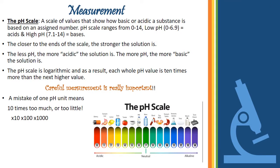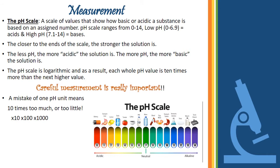pH shows the acidity or basicity of a substance based on a scale which assigns numbers ranging from 0 to 14. Low pH equals acid, high pH equals base, and the closer to the end of the scale, the stronger the solution. Importantly, the pH scale is logarithmic — each value is 10 times less than or greater than the next. For example, pH 4 is 10 times more acidic than pH 5, and 100 times more acidic than pH 6. The same property holds for values higher than 7 up to 14.